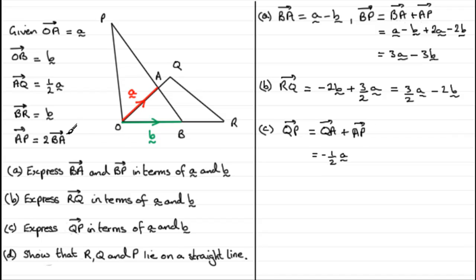And what about AP? Well AP is twice BA. We've got BA up here, so if I do twice it, double it, I've got plus 2a minus 2b. So we can simplify this because 2a minus a half a is going to be one and a half a or three over 2a, and then we've got the minus 2b.